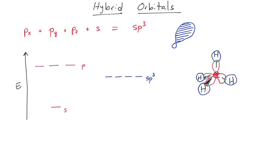Having these four sp3 hybrid orbitals allows the molecule to have a bond angle between the hydrogen, the carbon, and the hydrogen atom of 109.5 degrees. The bond angles are not constrained to 90 degrees like they would be with px, py, pz orbitals.